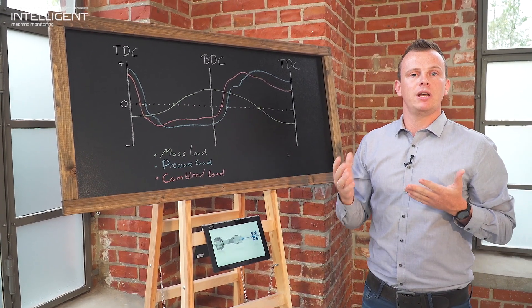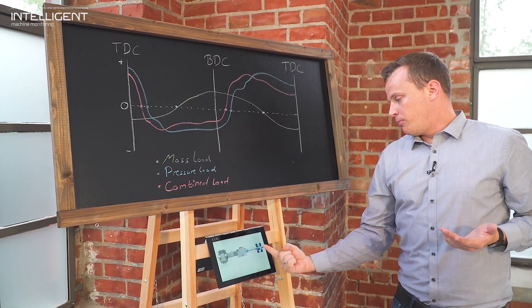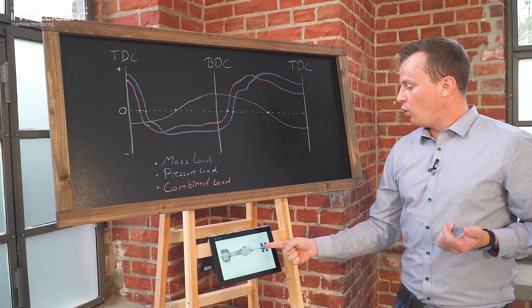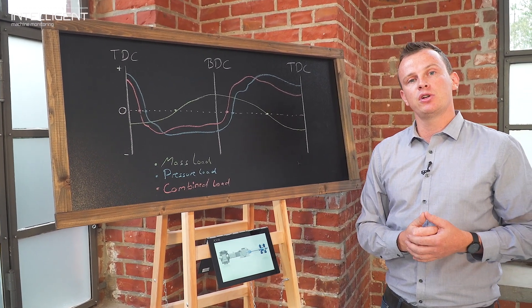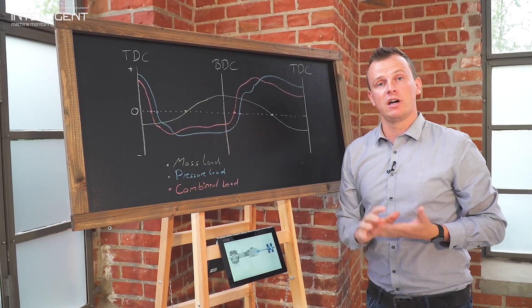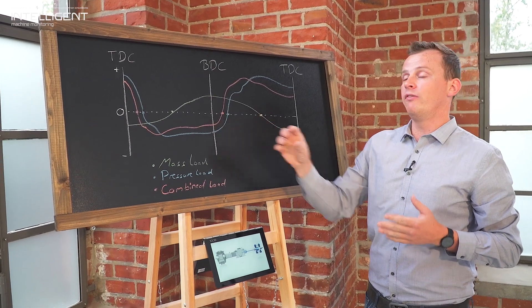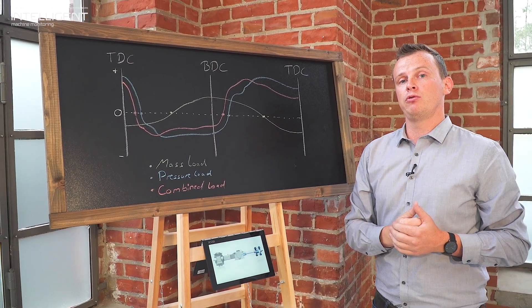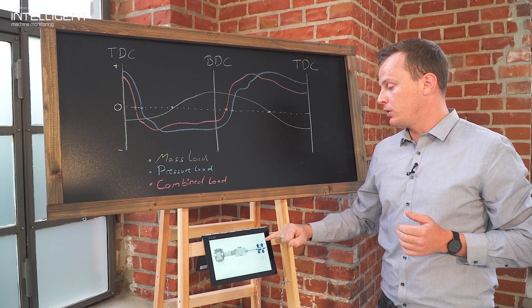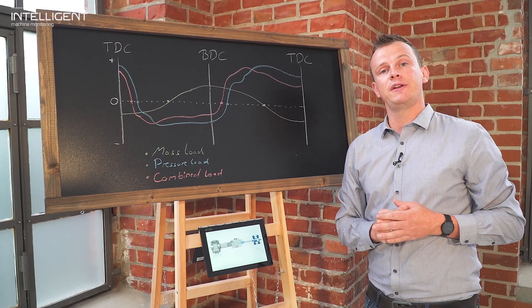But imagine you have for example a broken valve. Then we have, for example if a broken valve on the crank end side is here on the discharge side, we have always the high pressure inside that compression chamber and that will move the complete curve up or down depending on which valve is broken. And we have no or only a very small load reversal. And in this case the crosshead pin is not lubricated because it's pushed always to one direction and we have no lubrication on that side.